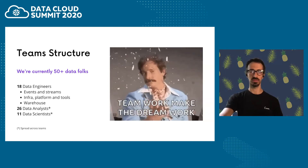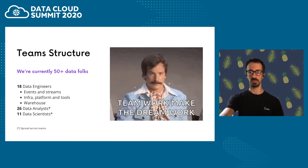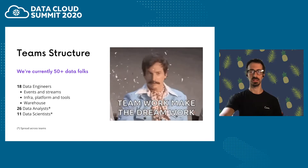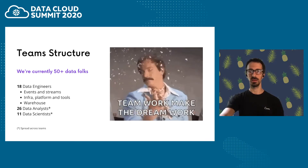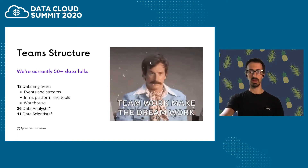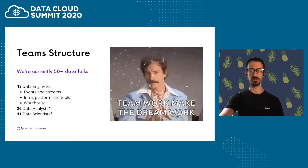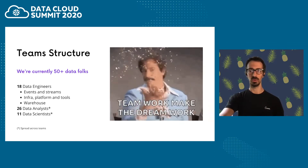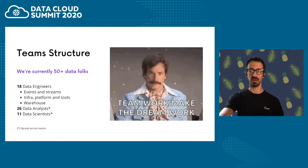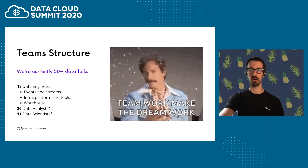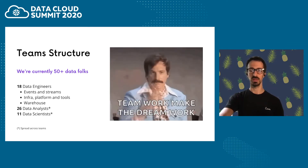Next, we have the data analytics specialty. With a current headcount of 26, this is the fastest growing data specialty at Canva — two years ago there were only five of them. They work spread across different teams, helping improve, track, and experiment with their products. Finally, we have the data scientists. At the moment, they have 11 of them and growing steadily. They also work spread across different teams in a similar configuration as the data analysts do.